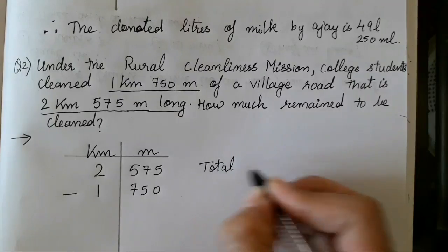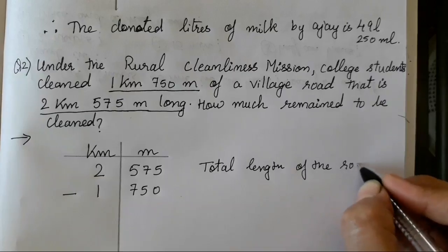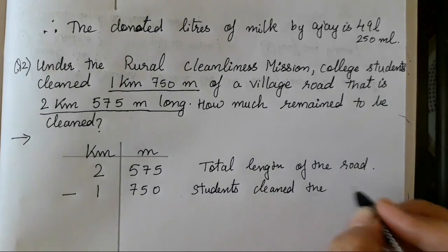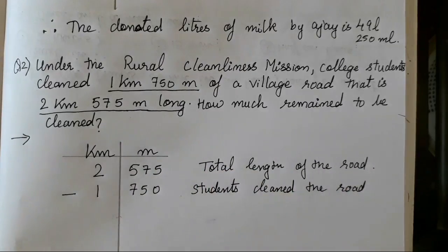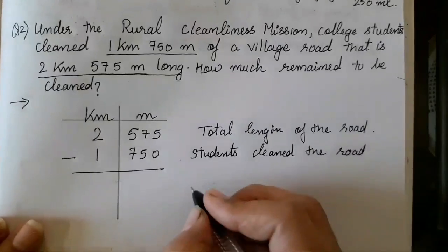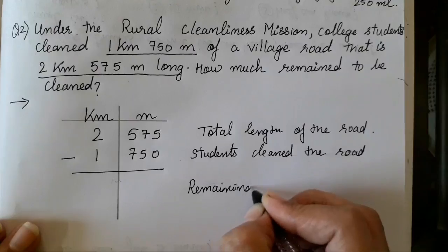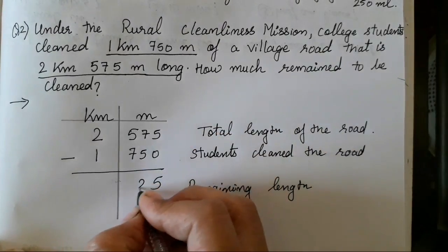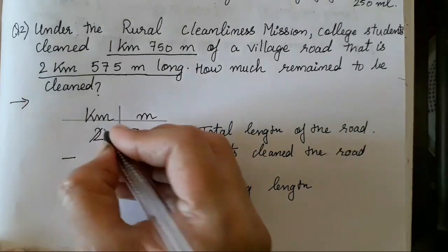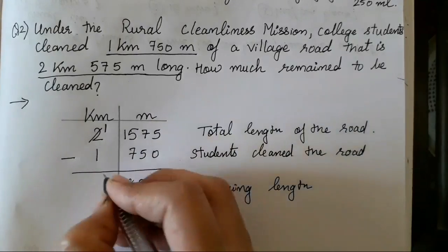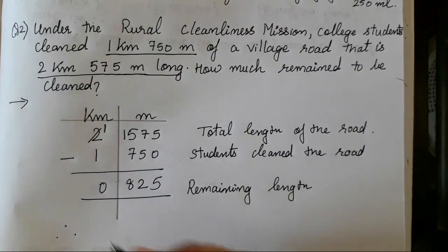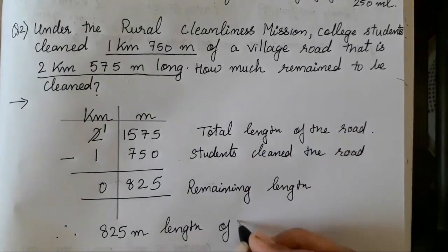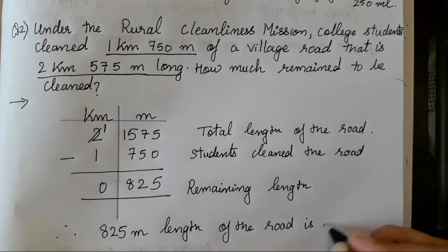Write the total length of the road and the length students cleaned. We subtract to find the remaining length. We cannot subtract 5 from 5 in the hundreds place, so we borrow 1 from 2, making it 1. Then 15 minus 7 is 8, and 1 minus 1 is 0. Therefore, 825 metres of road length remains to be cleaned.